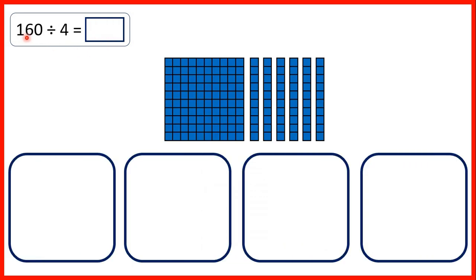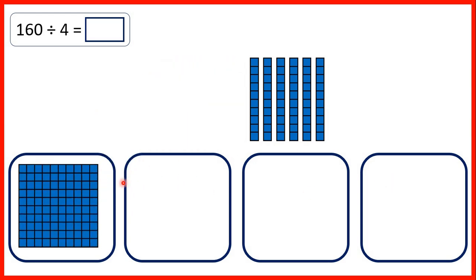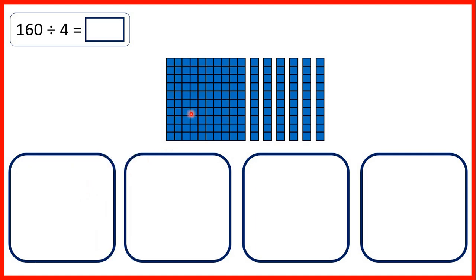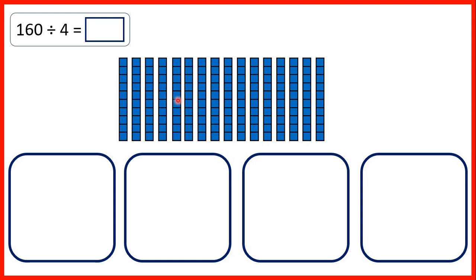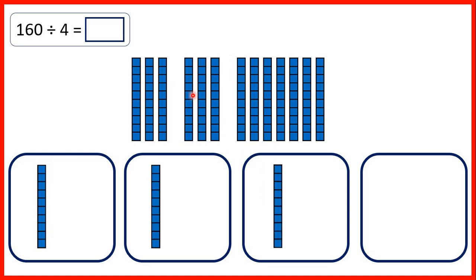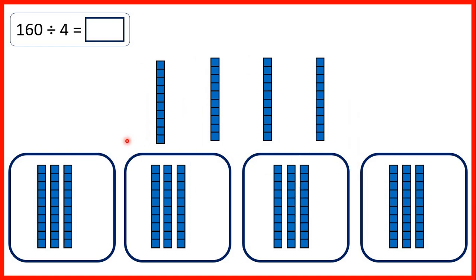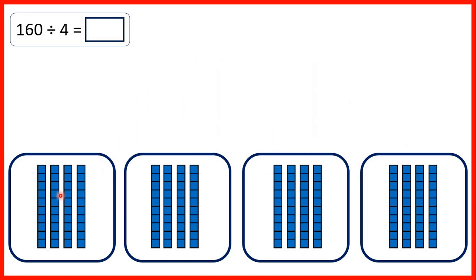Then we had 160, so that's 1 hundred and 6 tens divided by 4, so we're sharing out into 4 groups. We can't share out our 100, because when we divide we need equal groups. So instead we split our 100 into 10 more tens, and then we can share out those 16 tens. When we do that, we get 4 tens in each of our groups, so our answer is 40.